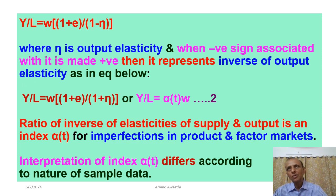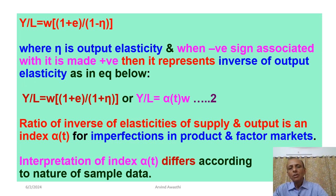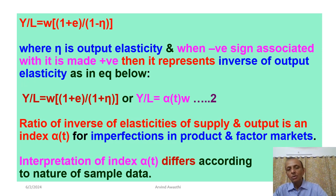E जो है wage elasticity है, और output वो inverse है of the output elasticity। इसलिए W = Y/L equal to W·(1+E) upon (1+Eta)। इस (1+E)/(1+Eta) को एक index के form में लिखते हैं: Y/L = alpha_T into W। Alpha_T basically index है of ratio of inverse of elasticities of supply and output — an index for imperfections in product and factor market।